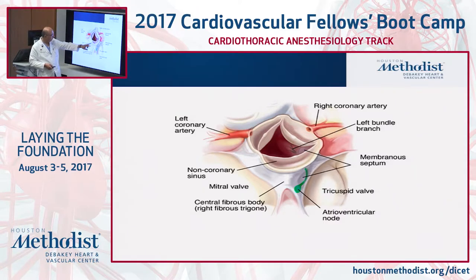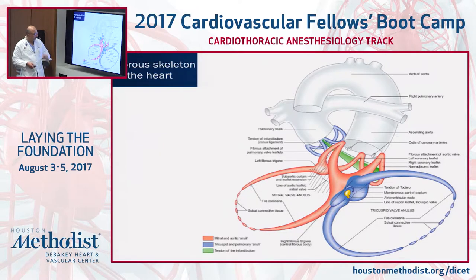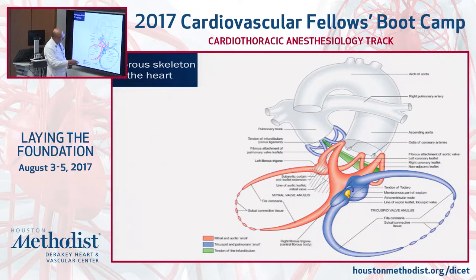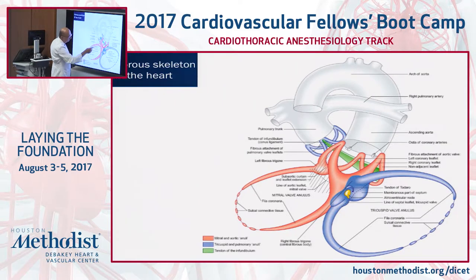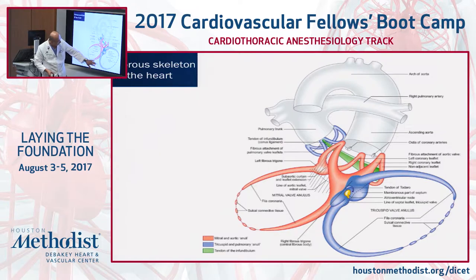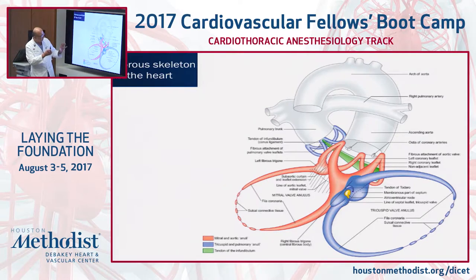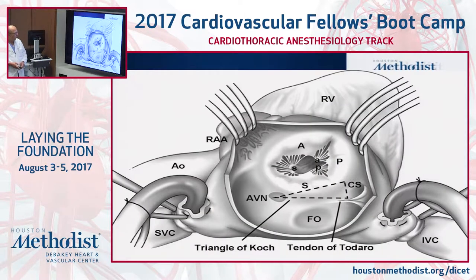The tricuspid valve is most closely related to the non-coronary sinus of the aortic valve. This picture shows the fibrous skeleton of the heart: the mitral valve with the aortic-mitral curtain, the three sinuses of the aortic valve, and the tricuspid valve located in relation to the central fibrous body or right trigone. The left trigone is on the other side. This gives you a 3D picture of how it's related principally to the aortic valve.